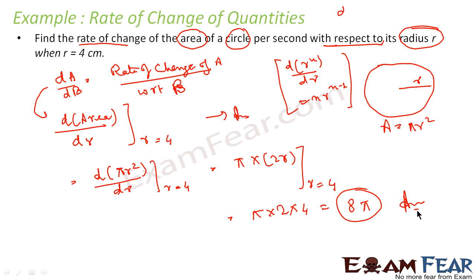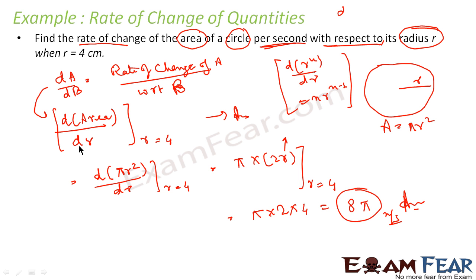Now, what is the unit? We are talking about rate of change of area with respect to radius — that is meters per second. The radius component is in meters and the area is in meters squared, so the unit of dA/dr is meters. The 'per second' in the question is just there to confuse you. So: rate of change of area with respect to radius is dA/dr = d(πr²)/dr = 2πr, and at r = 4 we get 8π.